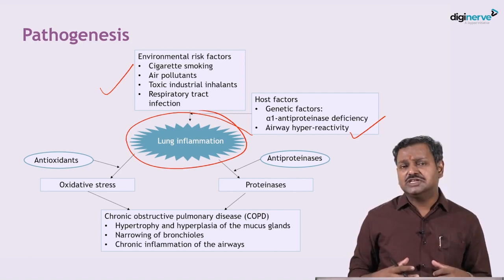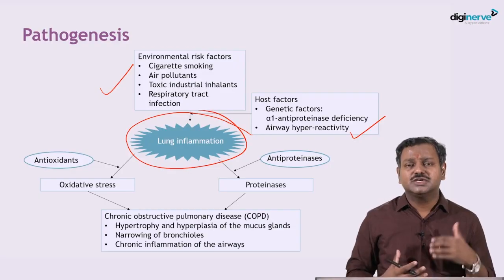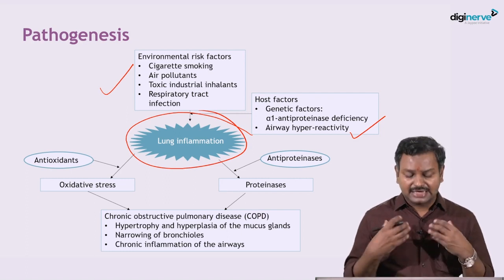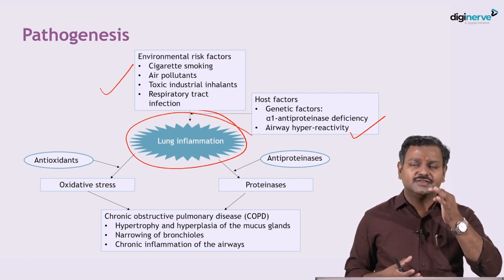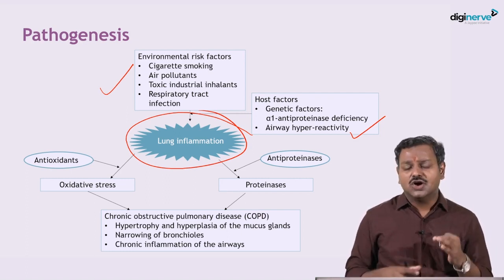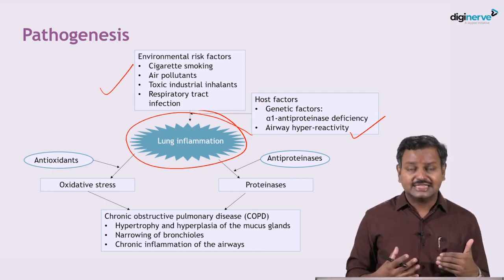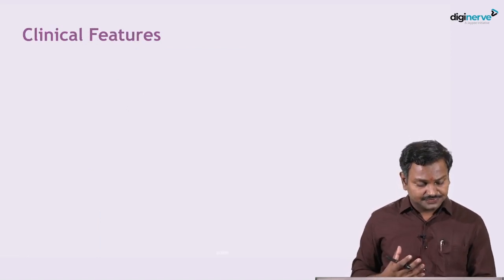Associated with hypersecretion due to mucosal gland hypertrophy and goblet cell hyperplasia, along with narrowing of the inflamed airways, all of these cause the patient to go into breathlessness and cough with expectoration.